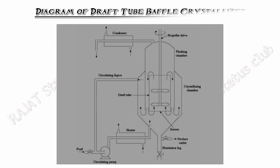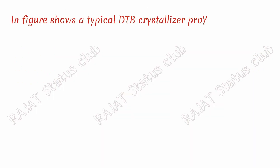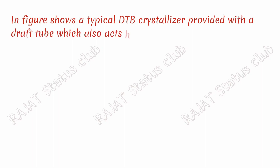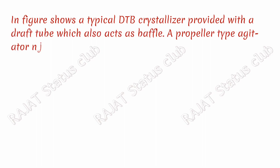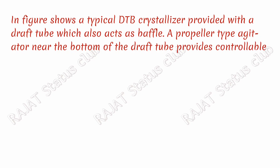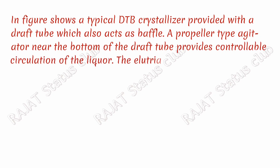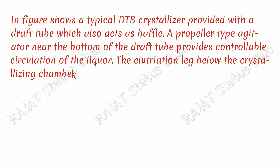The figure shows a typical DTB crystallizer provided with a draft tube which also acts as a baffle. A propeller-type agitator near the bottom of the draft tube provides control of circulation of the liquor.